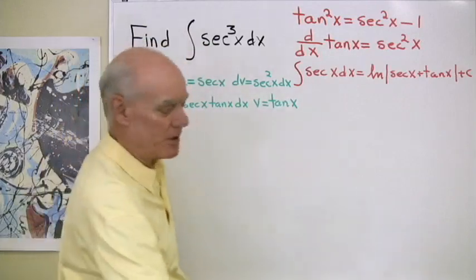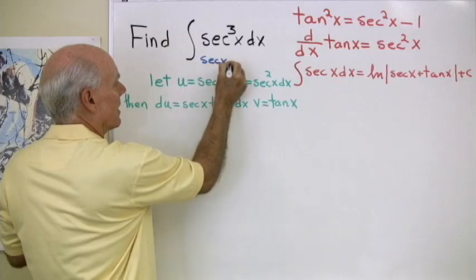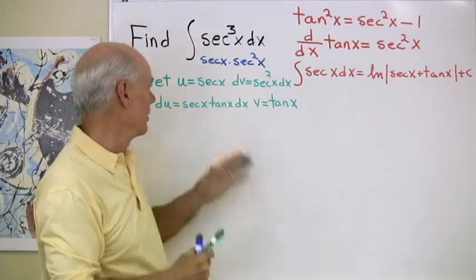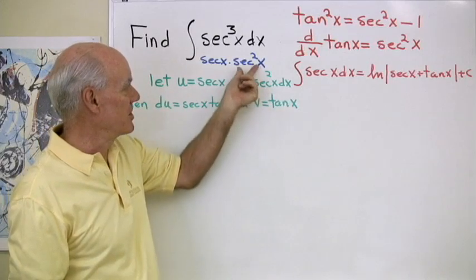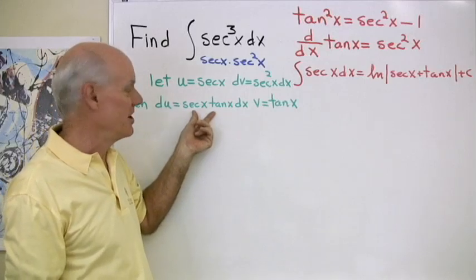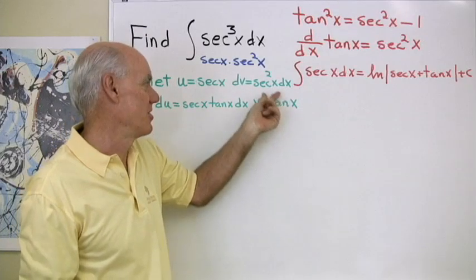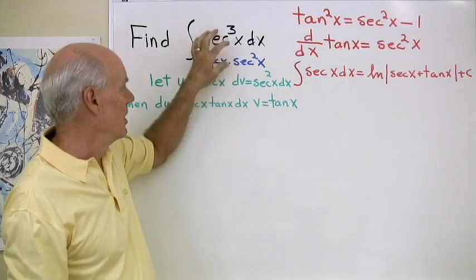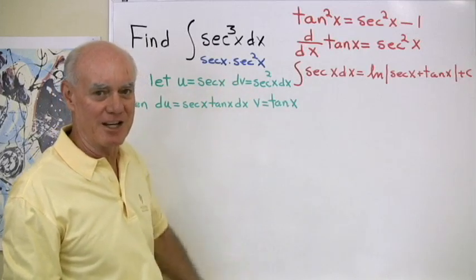When I look at this, I think of secant cubed as secant x times secant squared x, and I do this integration by parts substitution. Let u equal secant x — the first part — and dv equal secant squared x dx. This is easy to differentiate: the derivative of secant is secant tangent, and the integral of secant squared is tangent. I'm going to write that on the board and come back.